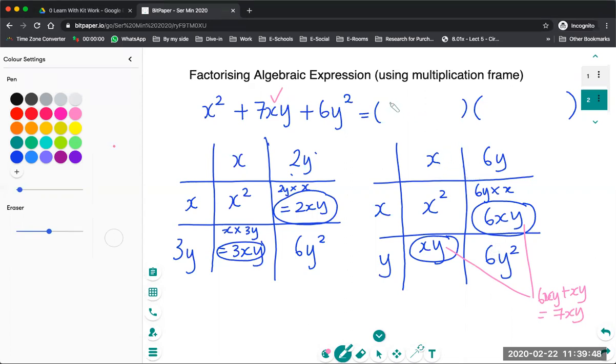So it's x plus 6y. So this will be my x plus 6y from here. Okay, and my x plus y. So this will be my factorized form for this expression.